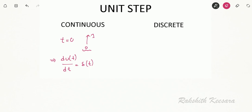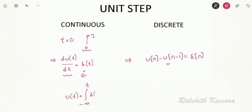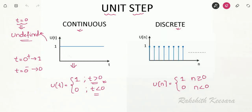Similarly, this differentiation is converted into a difference property in the discrete signal, that is u(n) minus u(n-1) will be equal to delta(n). And from this equation I can write that u(t) is equal to the integration from minus infinity to t of delta(tau) d-tau. This integration is converted into summation in the discrete domain, that is u(n) equals summation k equal to 0 to infinity of delta(n minus k). In the continuous time unit step signal, at t equal to 0 the amplitude is undefined, so we will define a new signal.